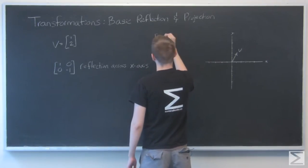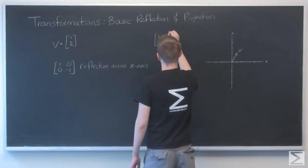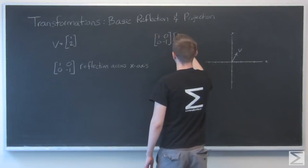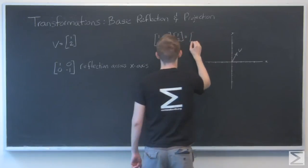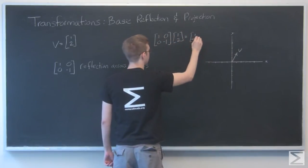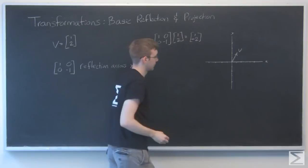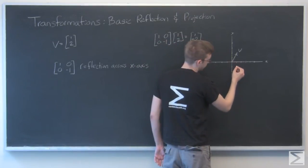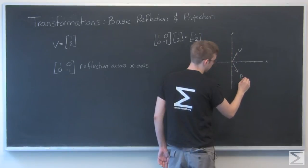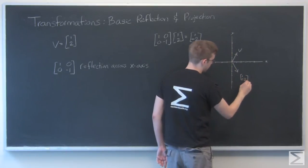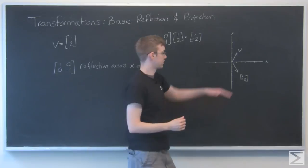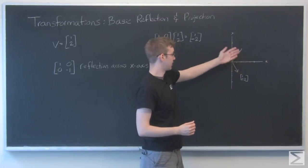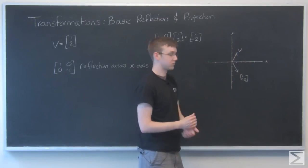So if we have that transformation which is 1, 0, 0, minus 1, multiplied by our vector 1, 2, the result we get is 1, minus 2. And that looks like this. We go out 1 and down 2. So it's basically like we had a mirror right here and that vector was reflected.